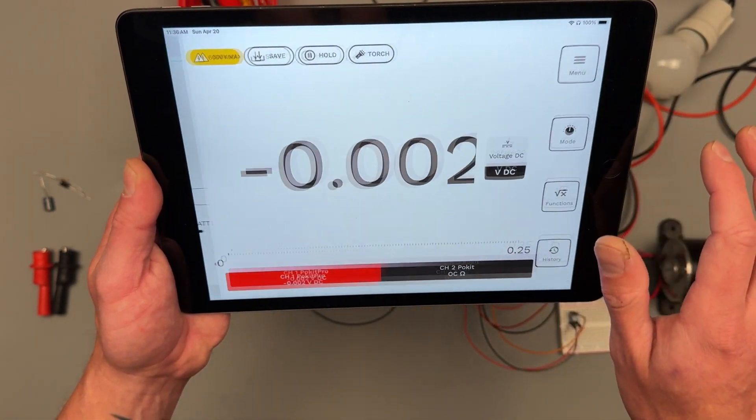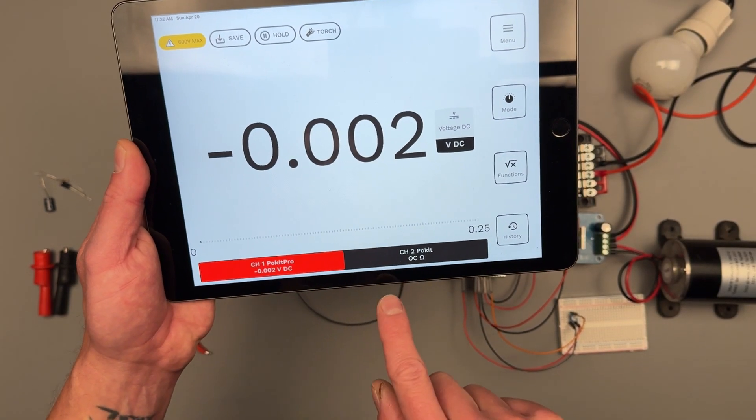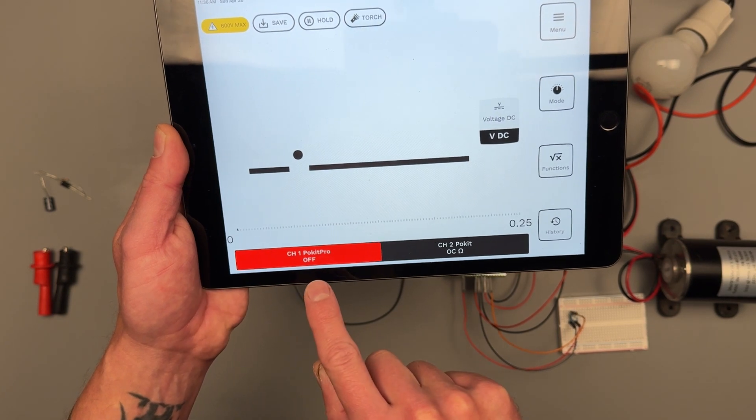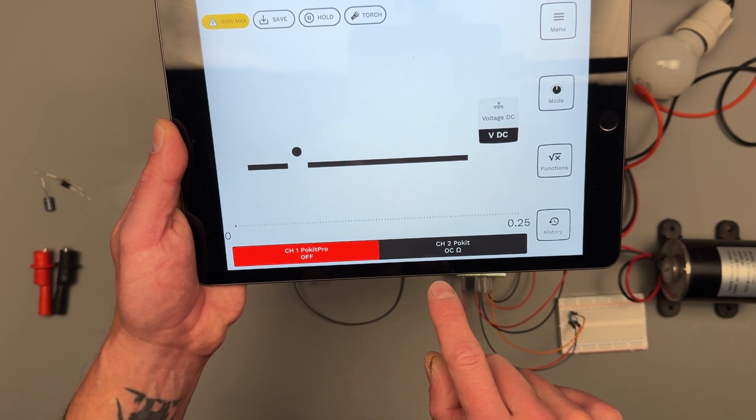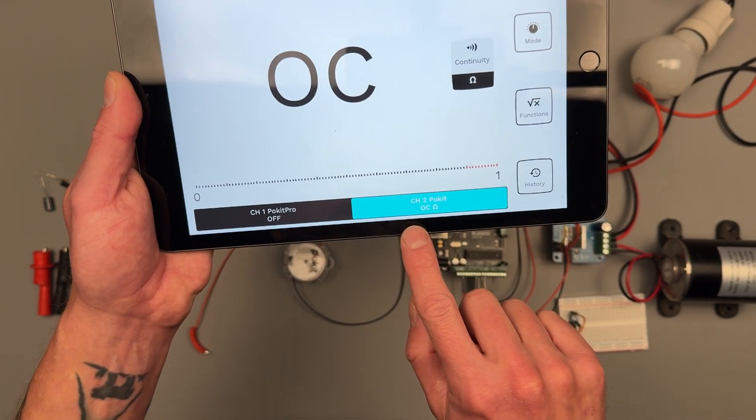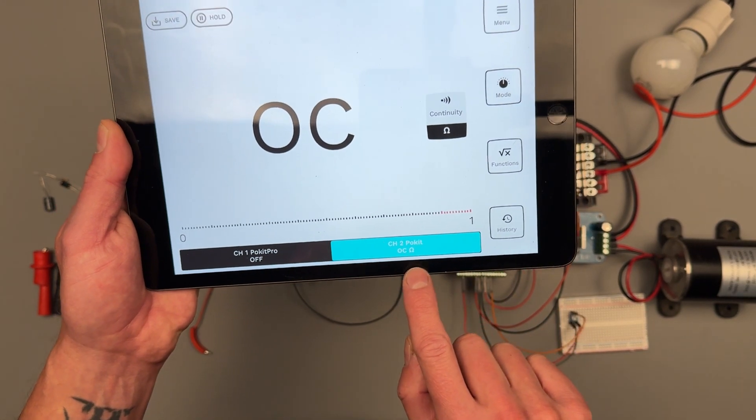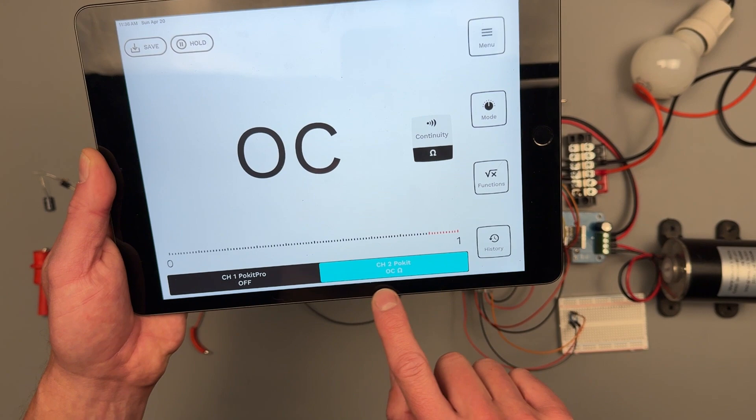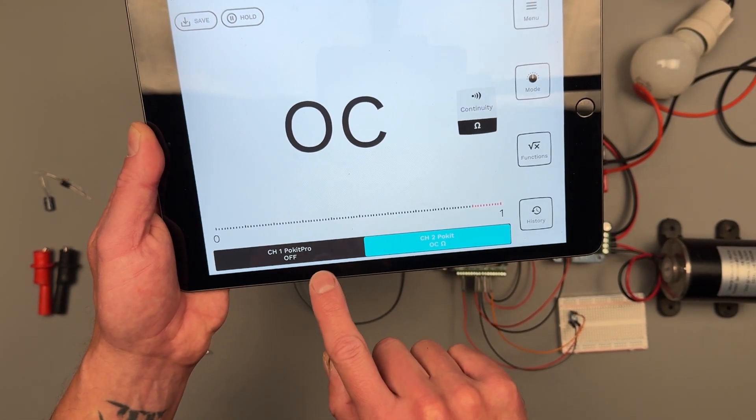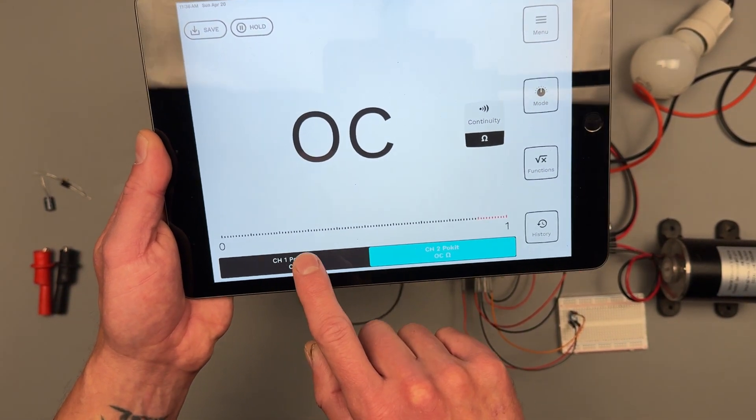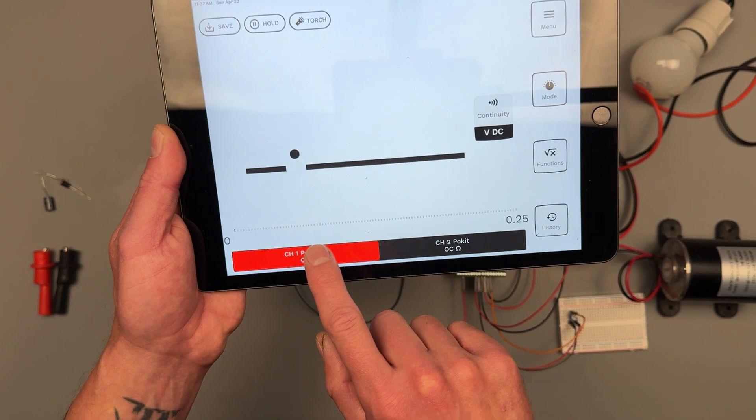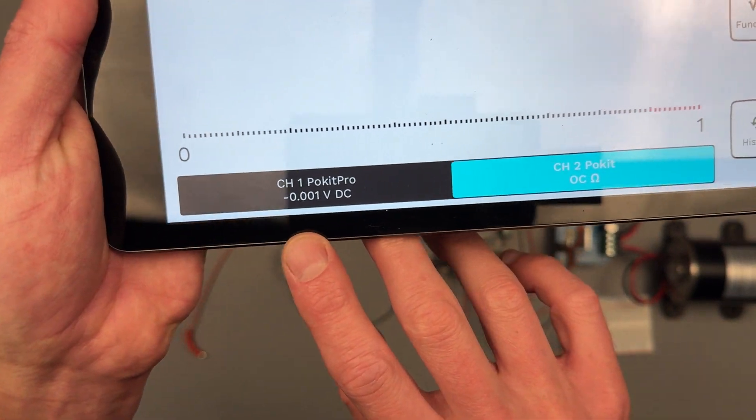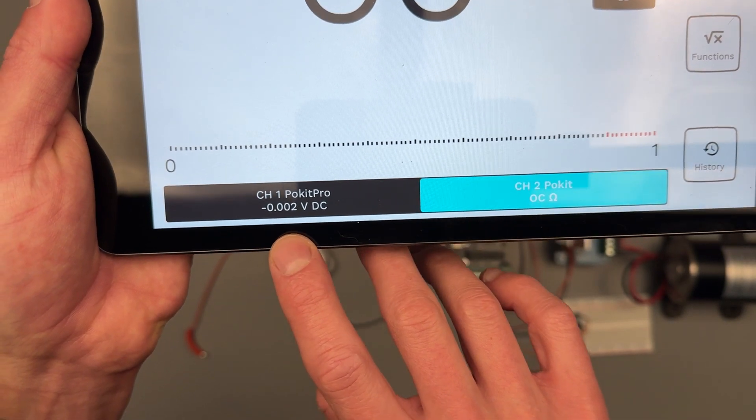Let's go ahead and hop into measure. We'll start with our multimeter. Down here at the bottom we can see that we have two devices - our pocket pro and pocket meter. If I want, I can turn off my pocket pro and just focus on my pocket meter. We can see our pocket meter is highlighted in the color that we've selected for our trace. Something that I can do is go over to pocket pro, turn it on, and go back over to my pocket meter.